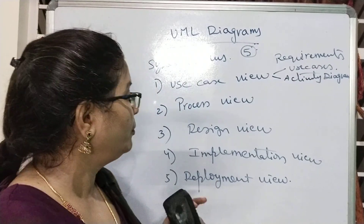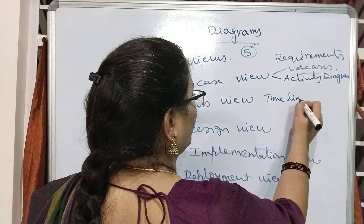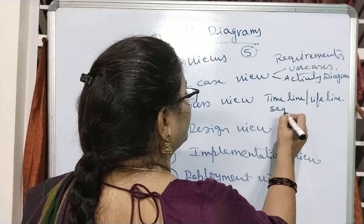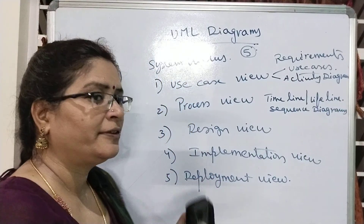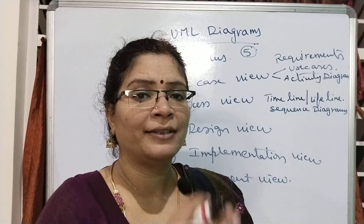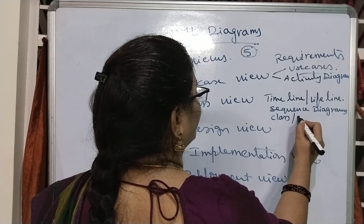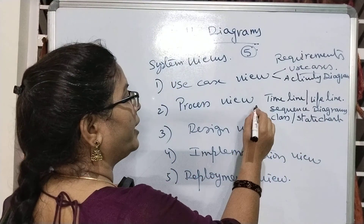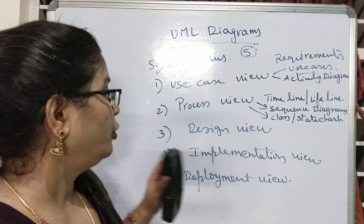Now coming to the process view. The process view describes the timeline or lifeline of objects — that is nothing but sequence diagrams — and how the object states are changing from one state to another, how the classes are changing, using class and state chart diagrams. So this process view contains two different kinds of diagrams: sequence diagrams, and class and state chart diagrams.